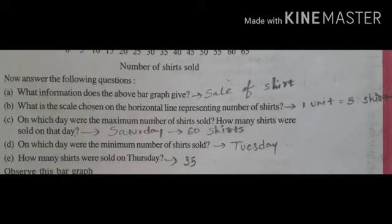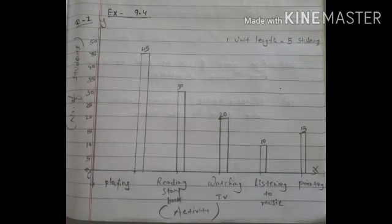So this is how we read the graph and give answers to the questions. The third question is the same — you have to do it for practice. Next, Exercise 9.4, first question, page number 202: a survey of 120 school students was done to find which activity they prefer to do in their free time.